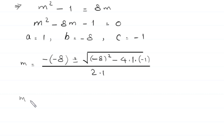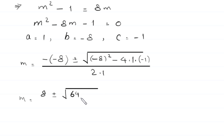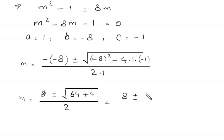Simplifying: the double negative gives positive 8, and negative 8 squared is 64. Negative 4 times 1 times negative 1 gives plus 4. So m is equal to 8 plus or minus square root of 64 plus 4, which is 68, divided by 2.